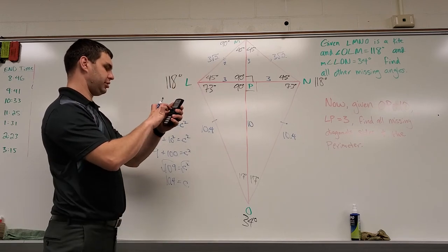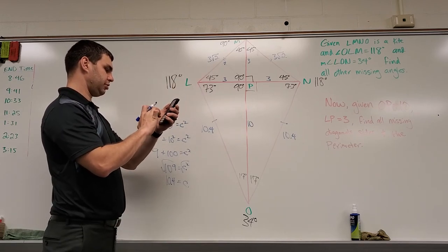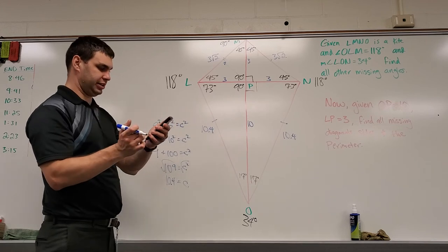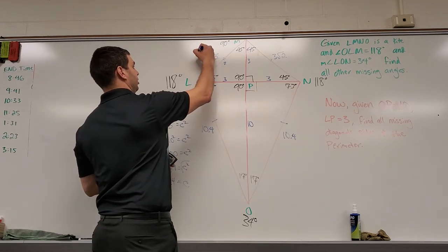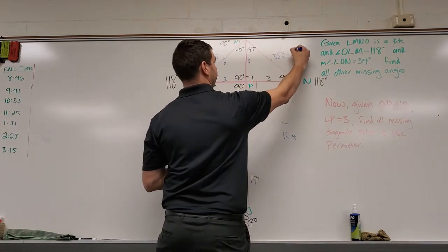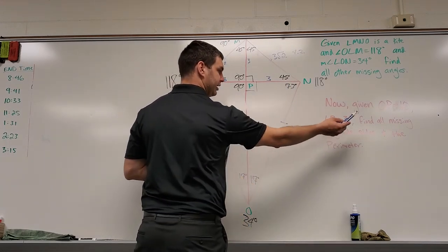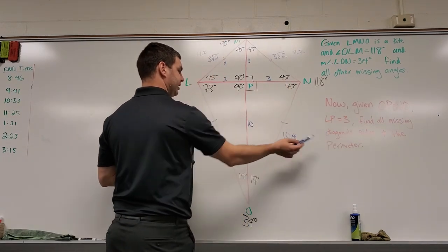And then up here, 3 times the square root of 2, 3 square root of 2 simplifies to be 4.2. Let's go 4.2 and 4.2. So we have the diagonals, we have the sides, now the perimeter.